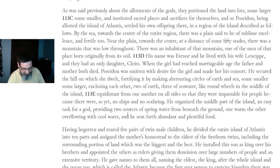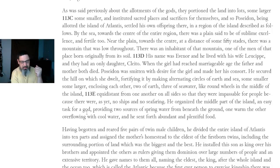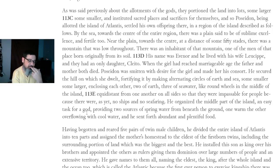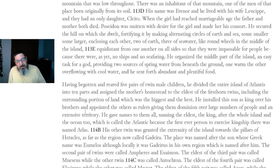He fertilizes it: he organized the middle part of the island — an easy task for a god — providing two sources of spring water from beneath the ground, one warm and the other overflowing with cool water, and he sent forth abundant and plentiful food. It doesn't say that the warm one was overflowing; it says that the cool one was. You would think the hot one would have the flow, but it doesn't say that.